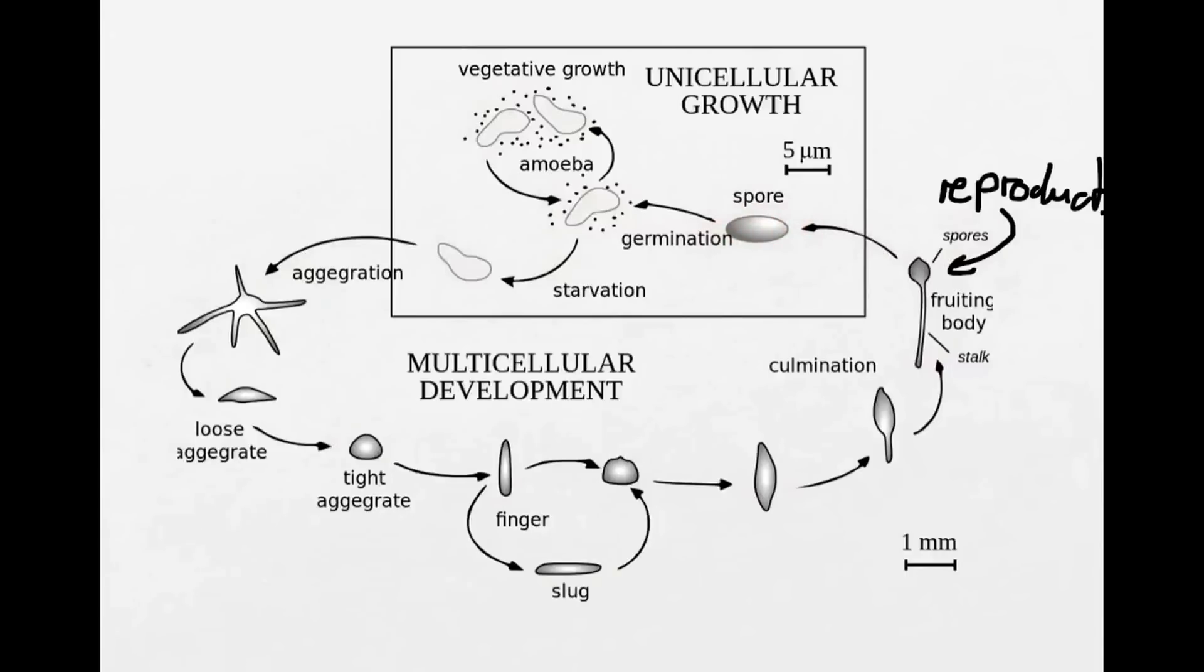They grow into spores and are dispersed by the wind, usually. The wind blows over the log and disperses the spores. These spores then germinate, form the amoeba, the amoeba aggregate when they have eaten all the food, and the new cycle starts again.